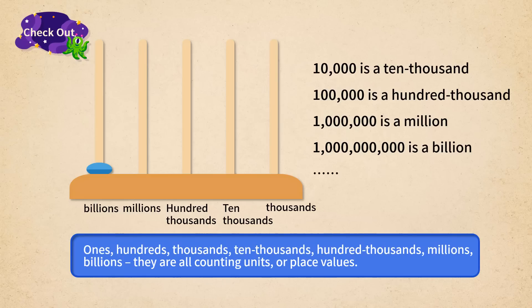In writing Arabic numbers form, we use a comma between every three digits, going from right to left.